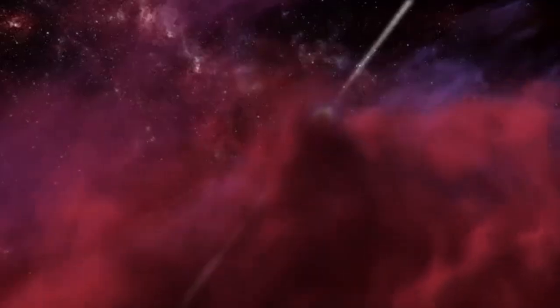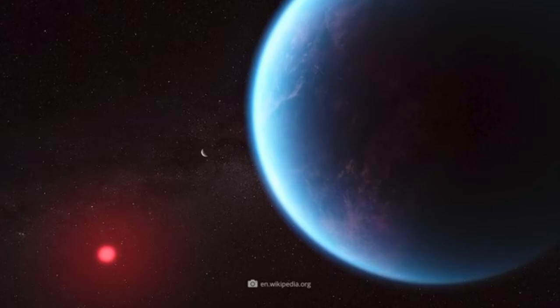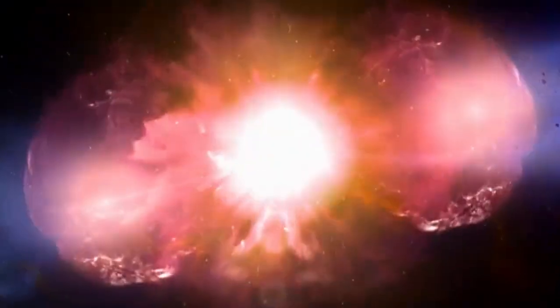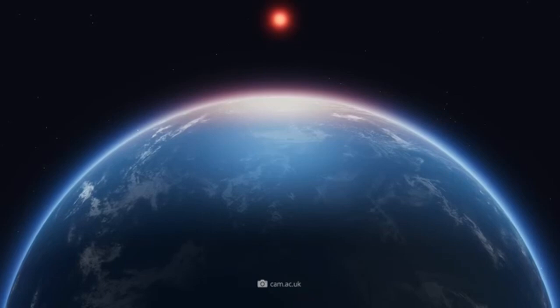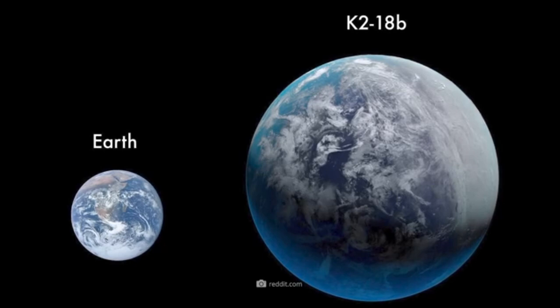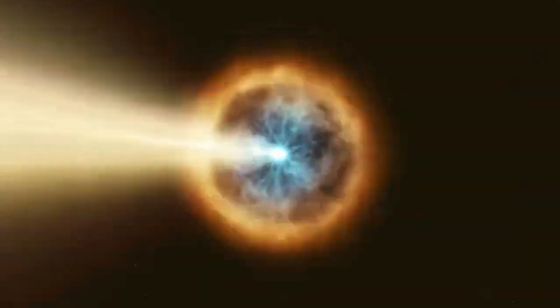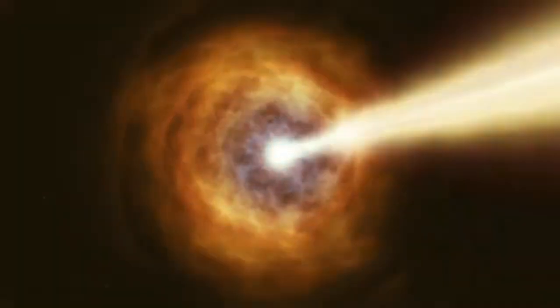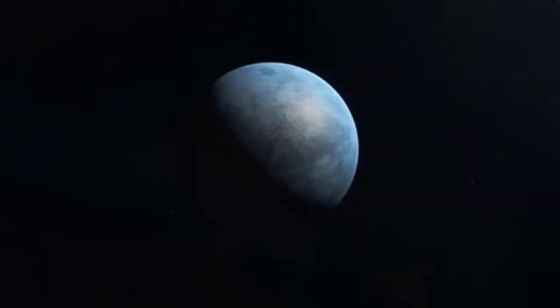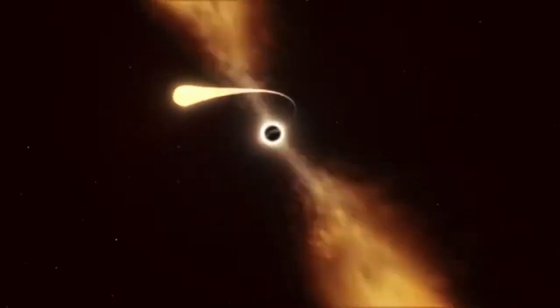Proxima Centauri b, located just 4.2 light years away, remains one of the most intriguing targets. It lies in the habitable zone of its host star, which suggests liquid water could exist on its surface. However, this planet also faces significant obstacles. Tidal locking may result in one hemisphere being perpetually scorched while the other remains frozen. Furthermore, its red dwarf star emits strong stellar flares and ultraviolet radiation, which could hinder the development of life. Even with these challenges, the proximity of Proxima Centauri b makes it an appealing subject for ongoing and future missions. Understanding its environment can offer valuable insights into planetary habitability and refine our criteria for identifying better worlds.